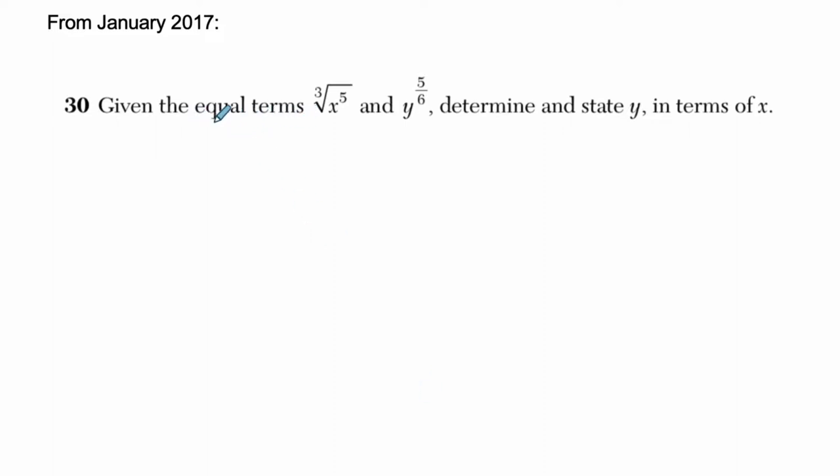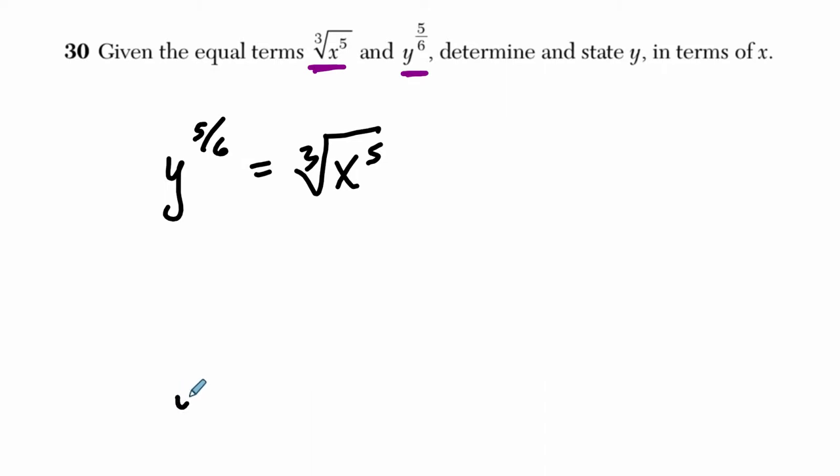All right, so we're told that we have the equal terms. So these are our two terms and they're equal. So I'm going to write that as an equation because they're probably going to ask us something about this equality right here. Okay, determine and state y in terms of x. So we want to get y all by itself. So we want some kind of statement that says y equals something in terms of x.